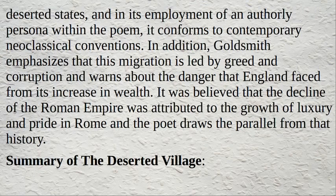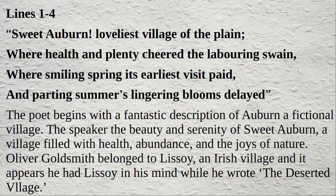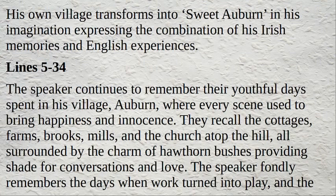Summary of The Deserted Village. Lines 1 to 4: Sweet Auburn, loveliest village of the plain, where health and plenty cheered the labouring swain, where smiling spring its earliest visit paid and parting summer's lingering blooms delayed. The poet begins with a fantastic description of Auburn, a fictional village filled with health, abundance, and the joys of nature. Oliver Goldsmith belonged to Lissoy, an Irish village, and it appears he had Lissoy in mind while he wrote The Deserted Village. His own village transforms into Sweet Auburn in his imagination, expressing the combination of his Irish memories and English experiences.